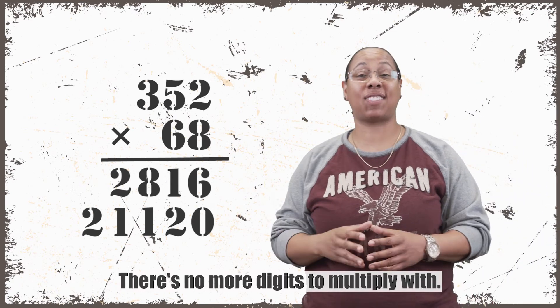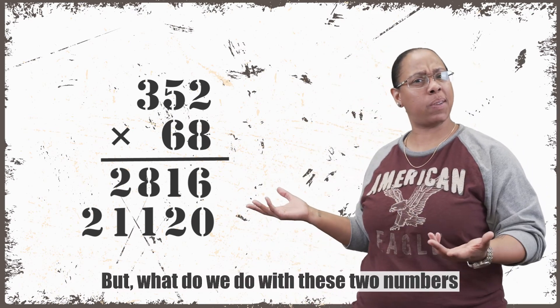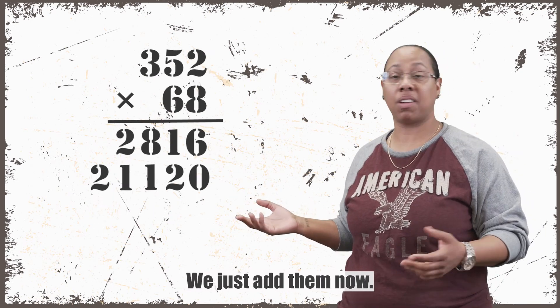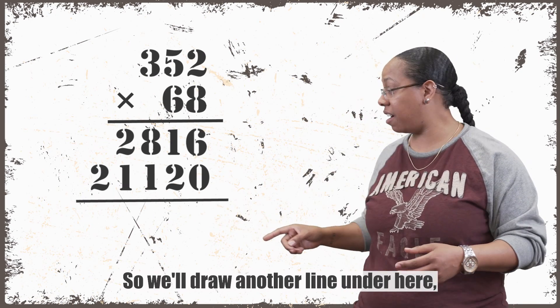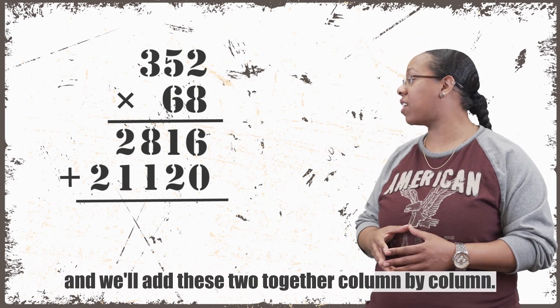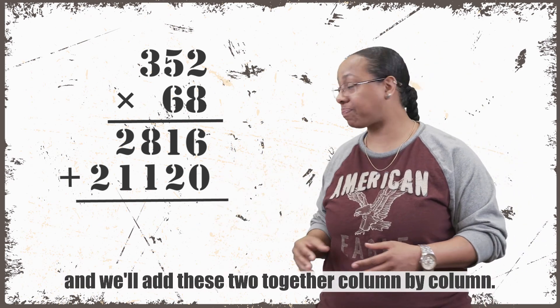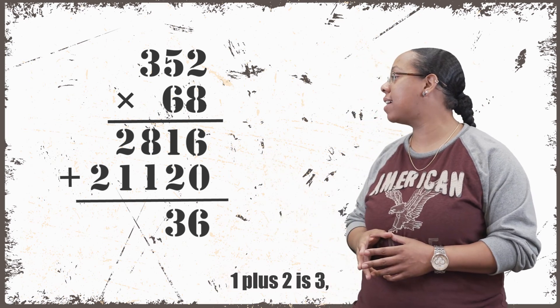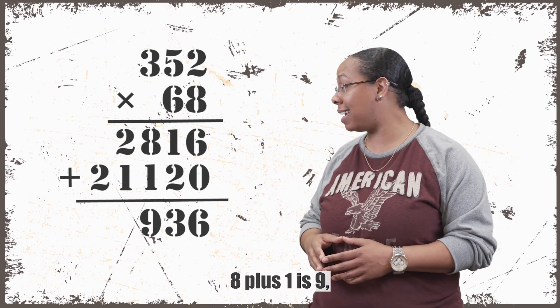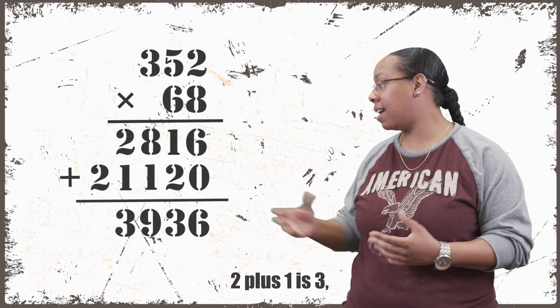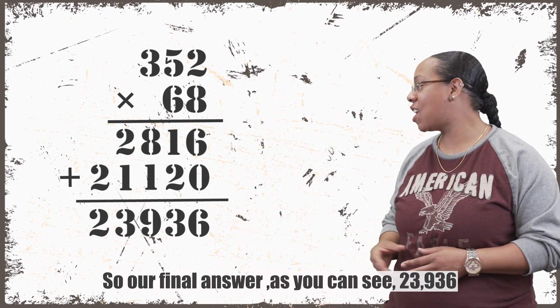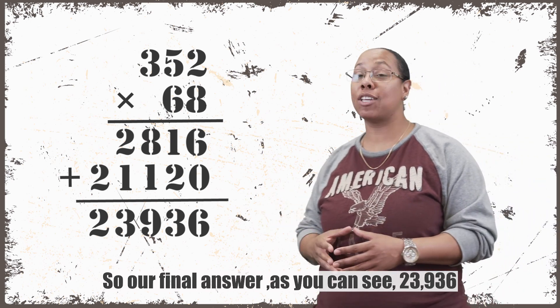There's no more digits to multiply with. But what do we do with these two numbers that we just wrote down? We just add them now. So we'll draw another line under here and add these two together column by column. So 6 plus 0 is 6. 1 plus 2 is 3. 8 plus 1 is 9. 2 plus 1 is 3. And then we just have a 2. So our final answer, as you can see, 23,936.